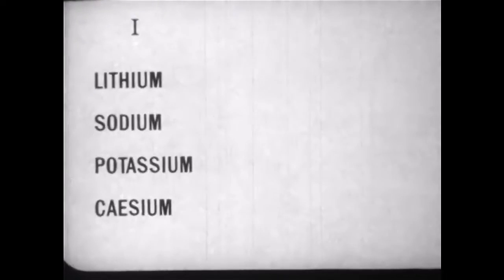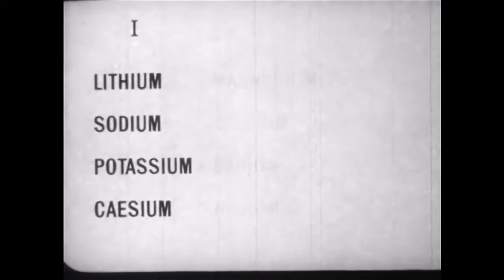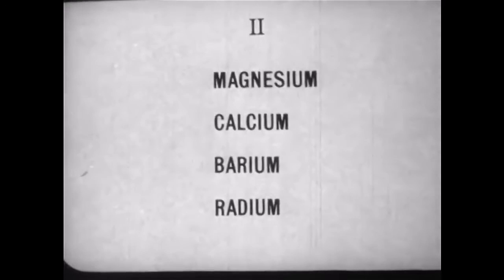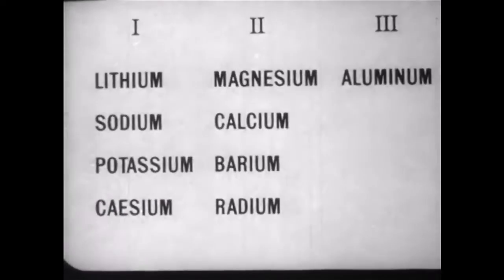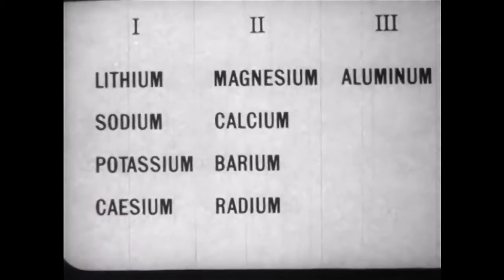These among others, one unit charge, these two unit charges, and of the common elements only aluminum, three. Thus we see that electricity comes in very small packages or units which are never subdivided.